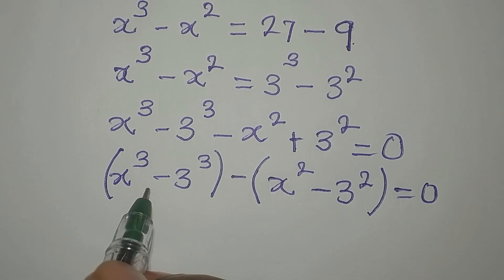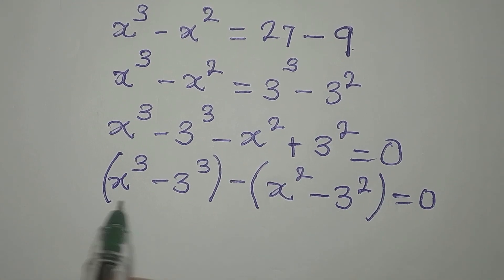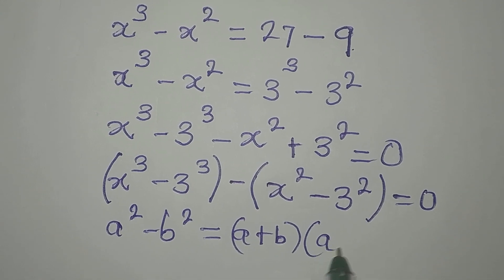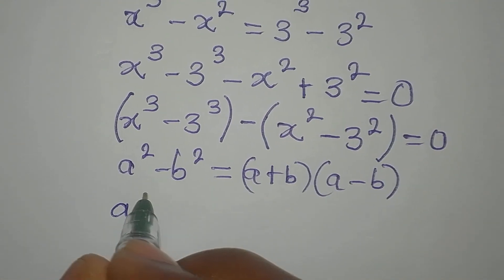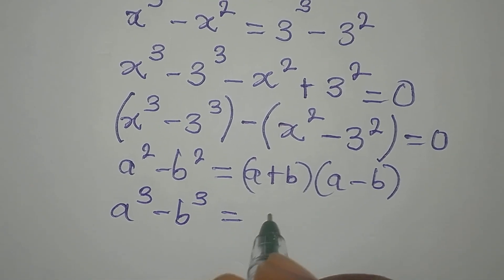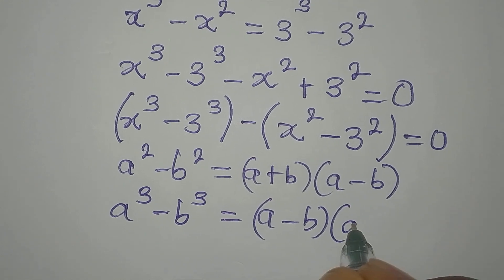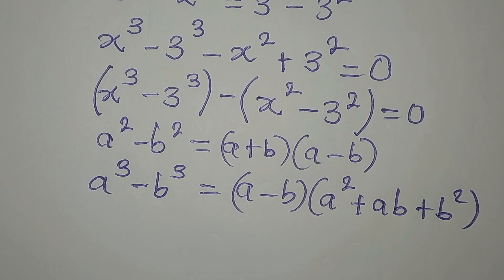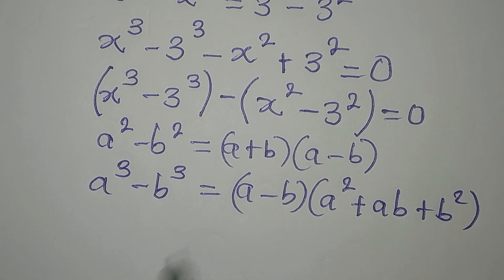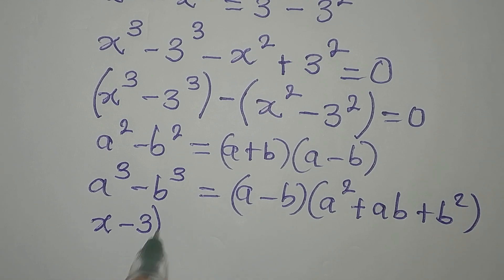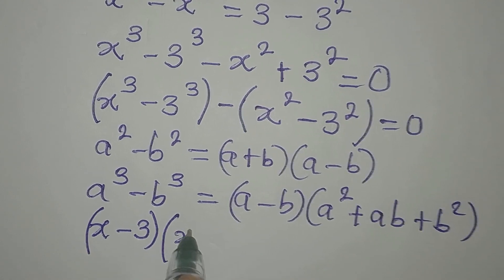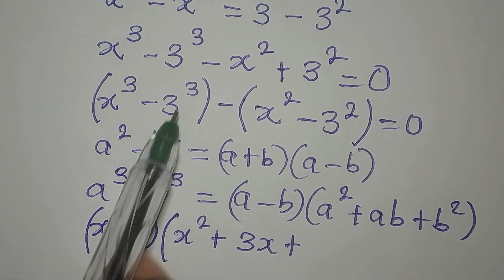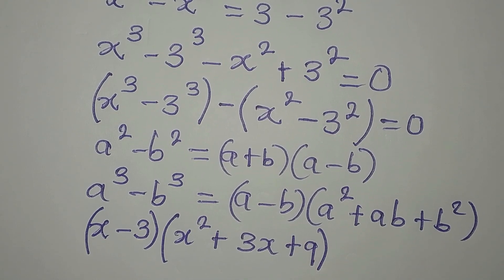We can apply difference of two squares here and difference of two cubes here. For difference of two squares: a² minus b² equals (a + b)(a − b). For difference of two cubes: a³ minus b³ equals (a − b)(a² + ab + b²). Applying difference of two cubes: a minus b becomes (x − 3), then a² is x², plus ab is 3x, plus b² is 3² which is 9.